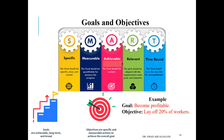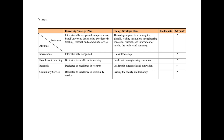Now let's move to some examples from a university. It's good to see your own organization's vision and mission statements. For example, the vision statement of this university is: 'an internationally recognized comprehensive Saudi university dedicated to excellence in teaching, research, and community service.' While it's not as short as Google's or Instagram's, universities are complex, and the three pillars — teaching, research, and community service — are typically included in university vision statements.